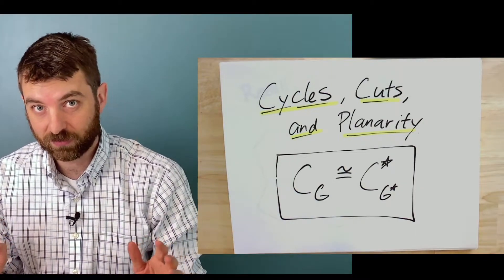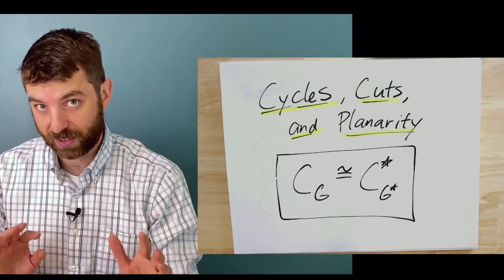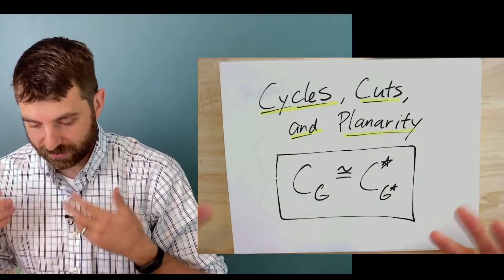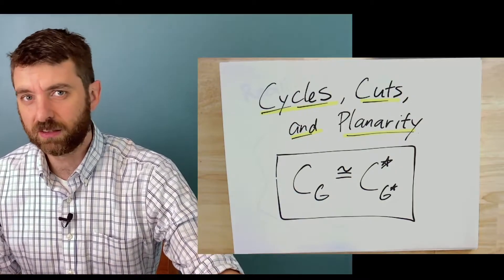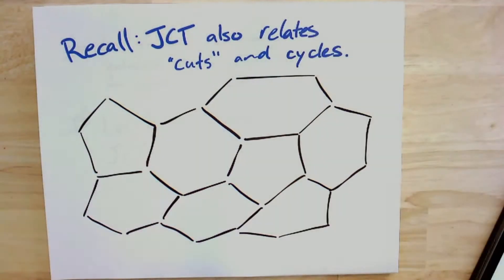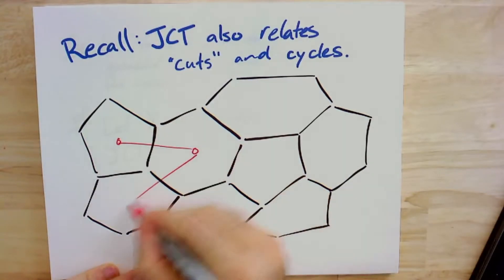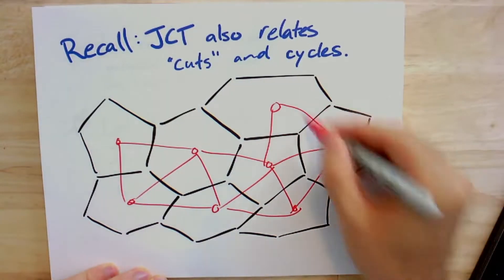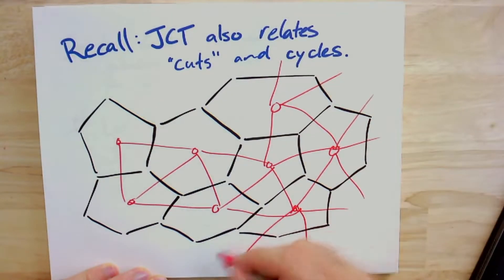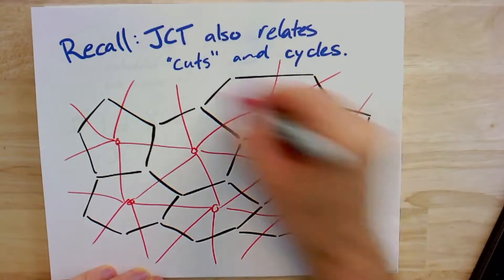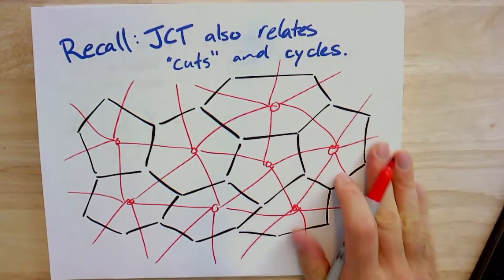This duality — between the graph and its dual, and the relationship between the cycle space and the cut space — gets played out in a very direct way when talking about planar graphs. The reason, which you may have guessed already, is because of the Jordan curve theorem. Looking at this planar graph, I can also draw its dual — you'll forgive me for not drawing the outer vertex for now. Maybe I'll draw some edges out there — okay, let's go nuts.